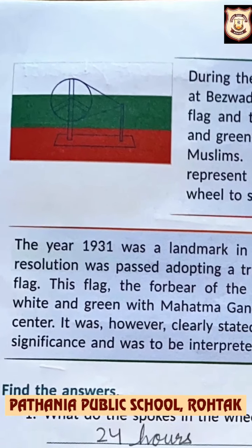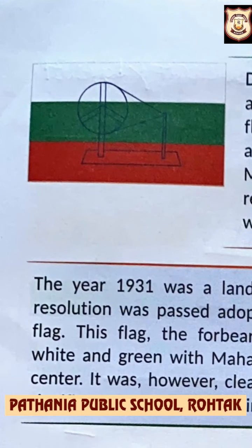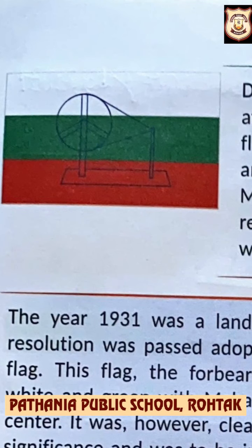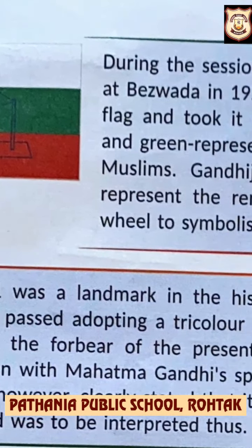This is the fourth National Flag of India. This flag was introduced during the session of the All India Congress Committee held at Vijayawada. An Andhra Pradesh youth prepared a flag and took it to Gandhiji. It was made of two colors — red and green — representing the two major communities, Hindus and Muslims. But Gandhiji suggested the addition of a white strip to represent the remaining communities of India, and a spinning wheel to symbolize the progress of the nation.